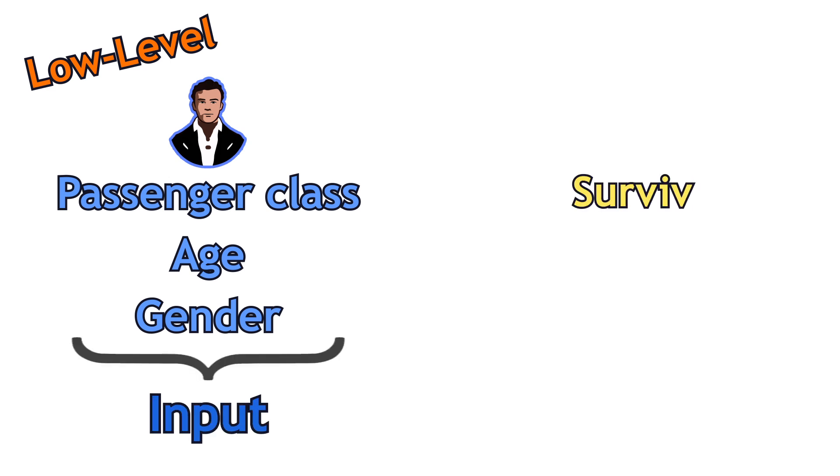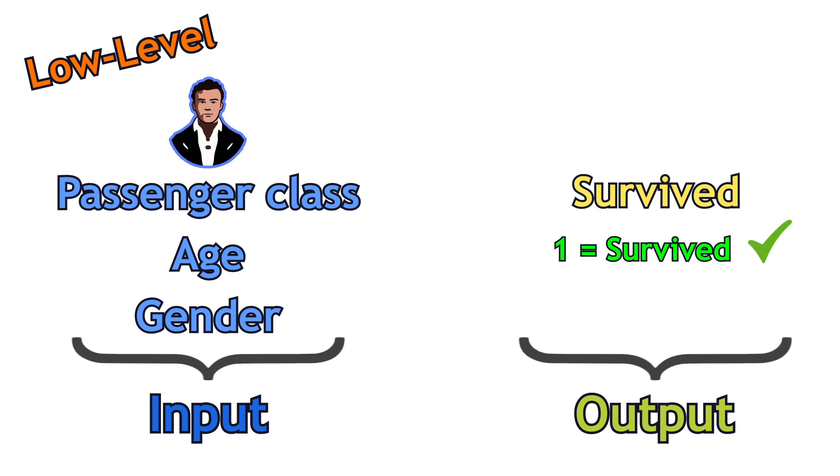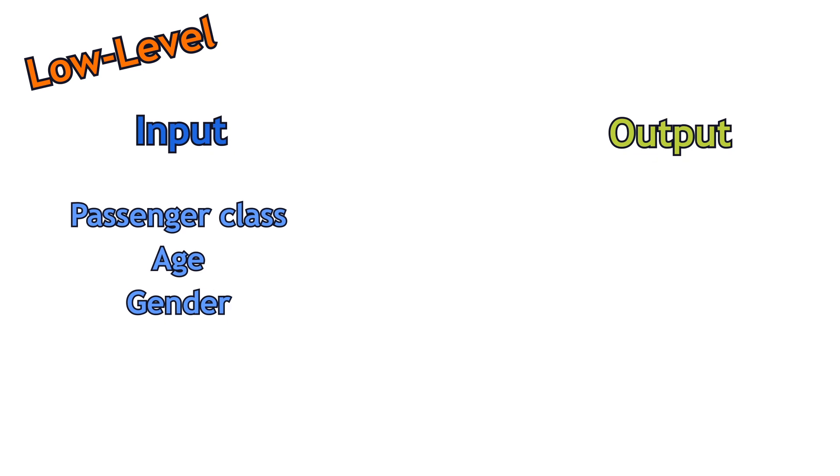Passenger class, age, and gender are the characteristics of each passenger, or the input. Survived variable is the output. 1 is equivalent to survived and 0 to not survive. The goal is to construct a model that takes the three features as input and provides a number between 0 and 1 as output.